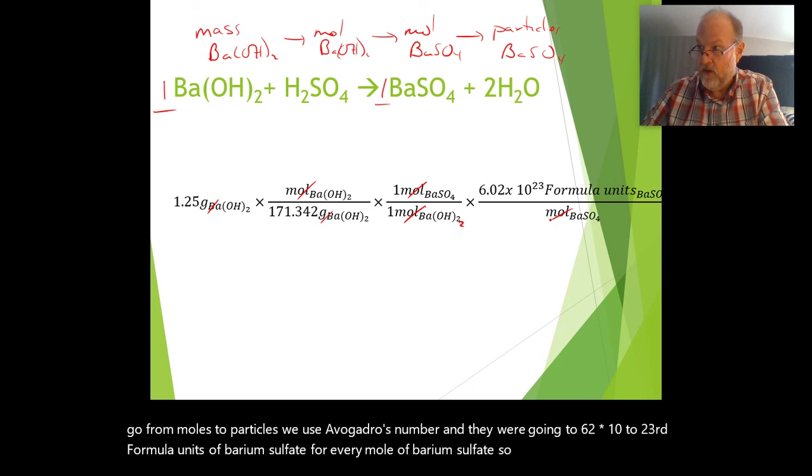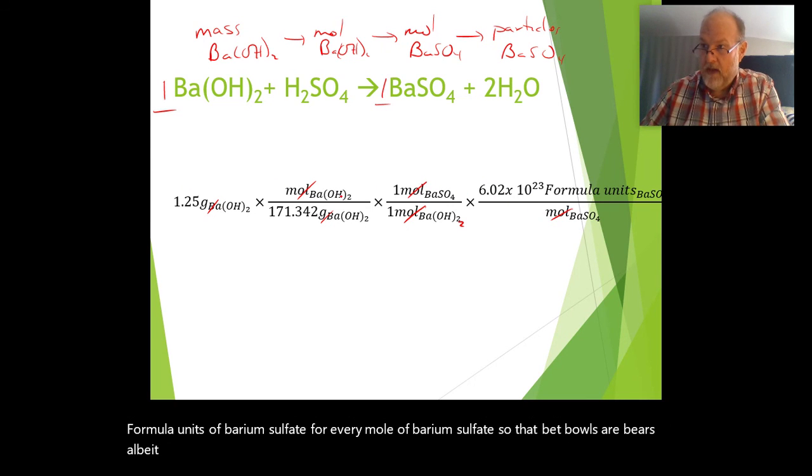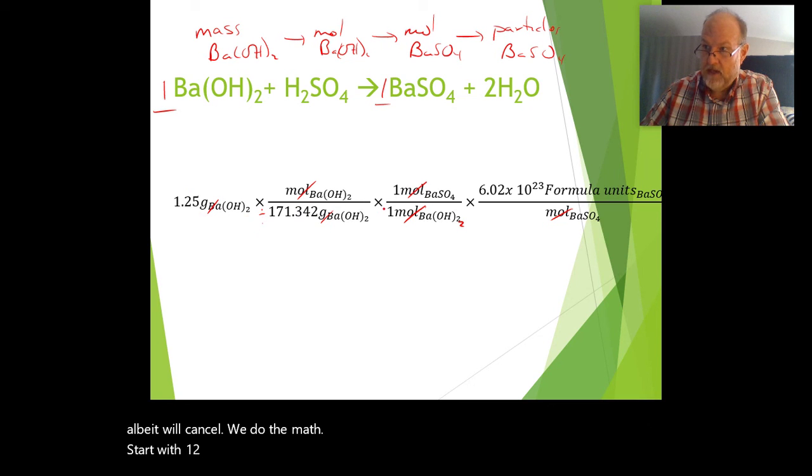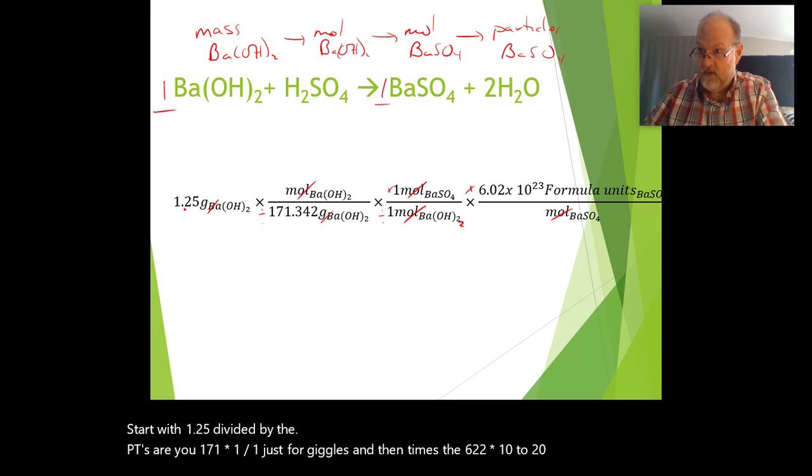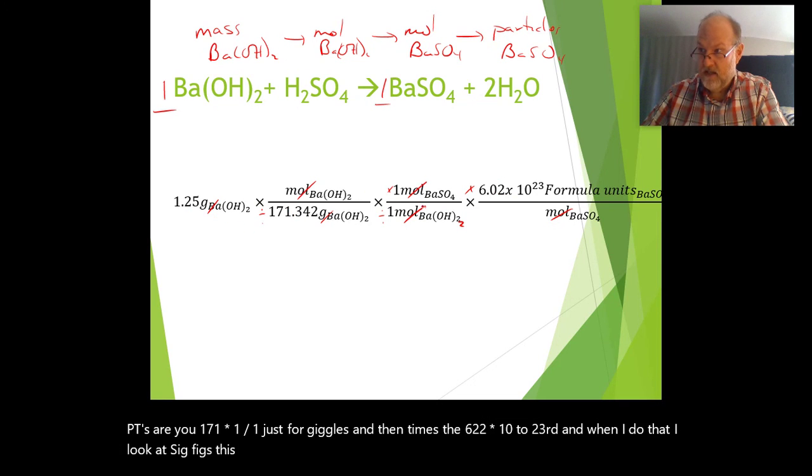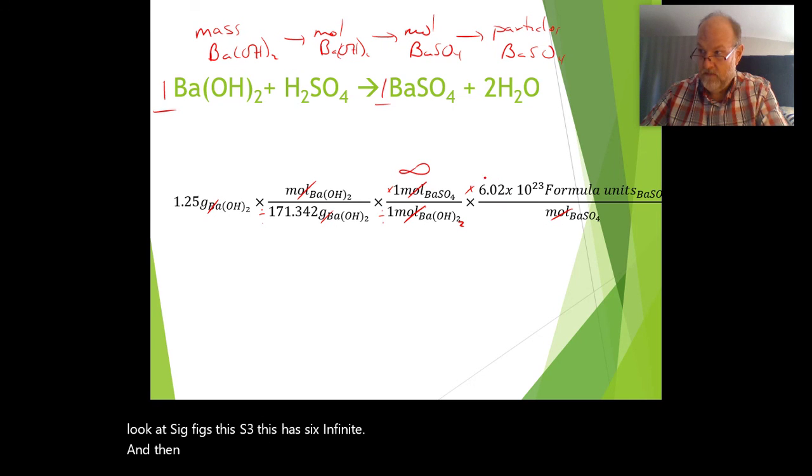We do the math: start with 1.25 divided by 171 times 1 divided by 1, and then times the 6.022 times 10 to the 23rd. When I look at sig figs, this has 3, this has 6, infinite, and then this has 4. So I need 3. I do the math, round to 3 sig figs. My final answer is 4.39 times 10 to the 21st formula units.